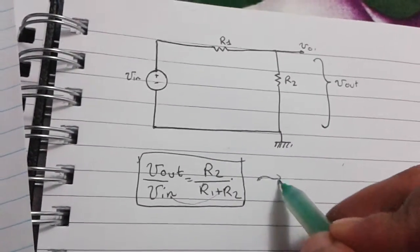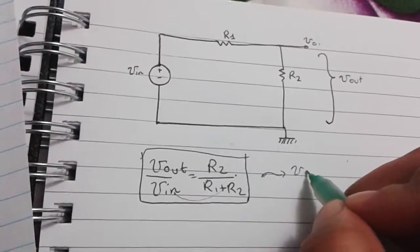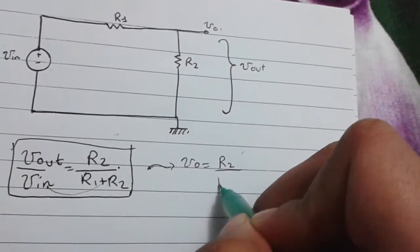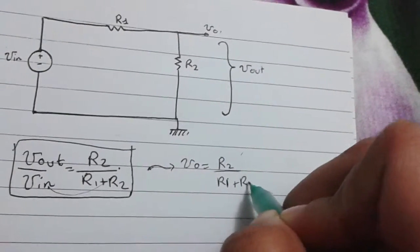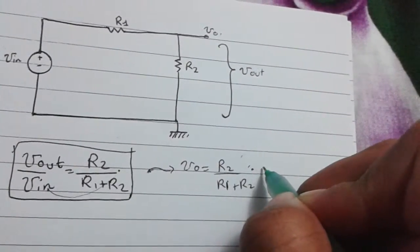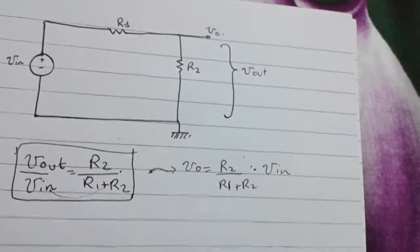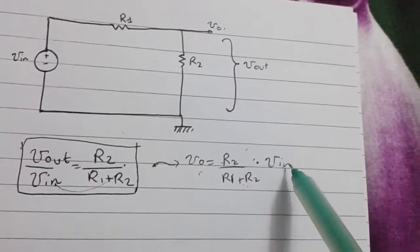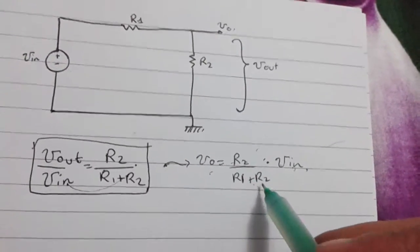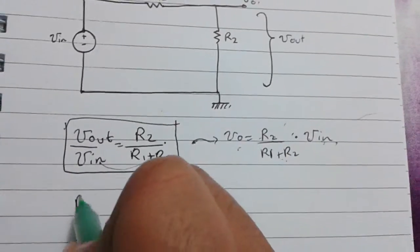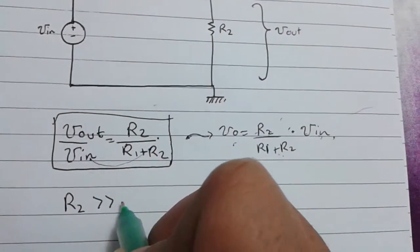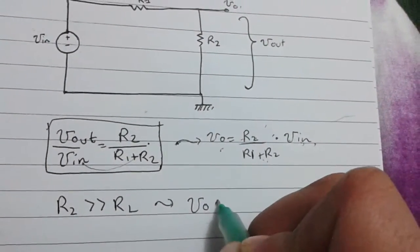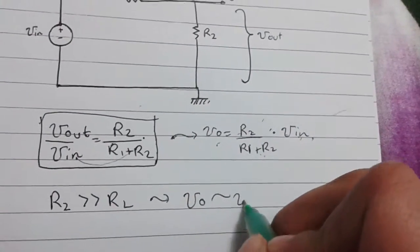Now, let's do a deeper analysis. So, we know the V_out can be written as V_in times R2 over R1 plus R2. So, if R2 is much, much greater than R1, what we'll see is that V_out is going to be roughly equal to V_in.